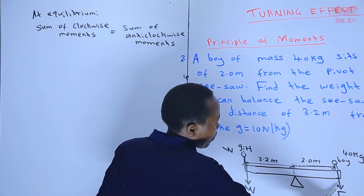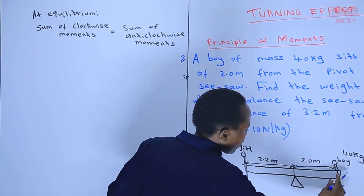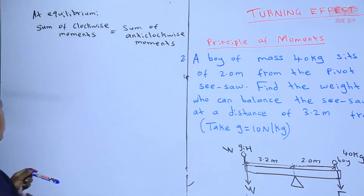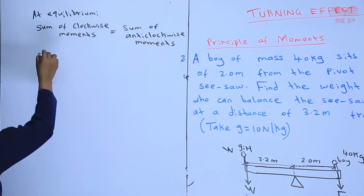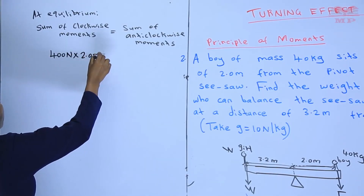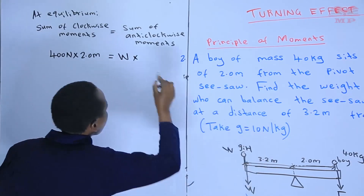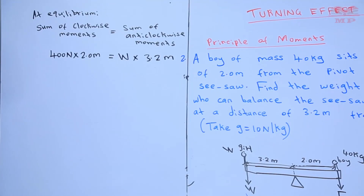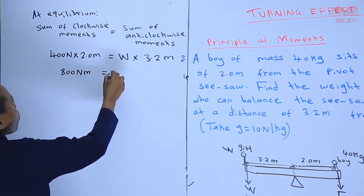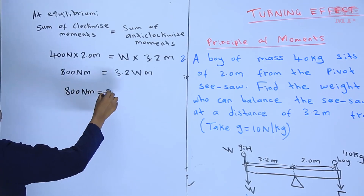We ask ourselves which forces create clockwise and which create anticlockwise moments. The boy's force creates a clockwise moment; the girl's weight creates an anticlockwise moment. For the clockwise moment: 400 newtons × 2.0 meters. For the anticlockwise moment: W (the girl's weight) × 3.2 meters. So 400 × 2.0 = 3.2 × W, giving us 800 newton-meters = 3.2W meters.